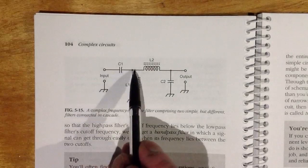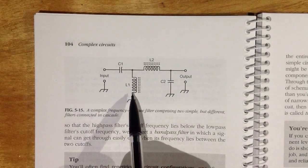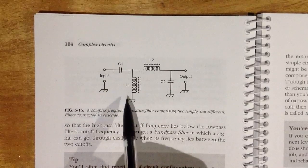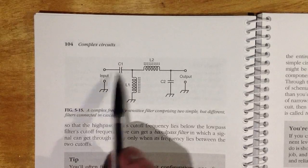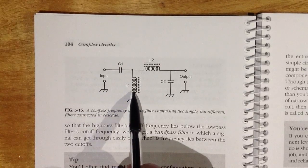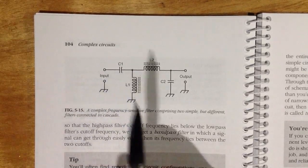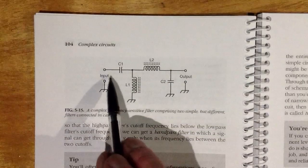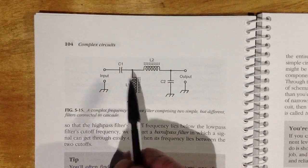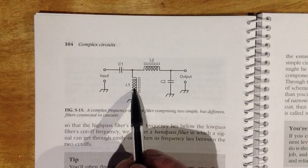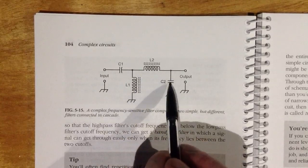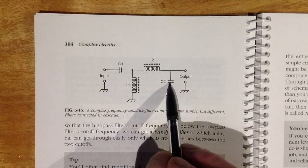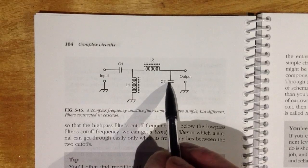Here's a low-pass filter - pardon me, this is a high-pass filter right here. That's a high-pass filter. C1 and L1 combine to form a high-pass L-network filter. L2 and C2, on the other hand, combine to form a low-pass network.